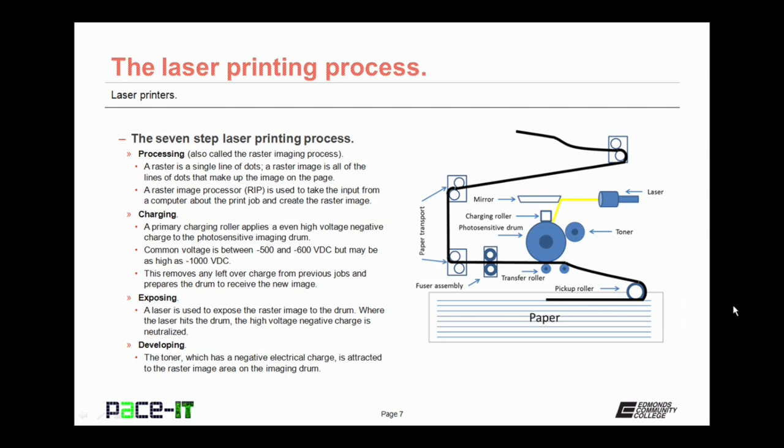The next step is charging. A primary charging roller applies an even high voltage negative charge to the photosensitive imaging drum. The common voltage ranges between negative 500 and negative 600 volts direct current, but it may be as high as negative 1000 volts direct current. The charging process will remove any leftover charge from previous jobs and it prepares the drum to receive the new image, which is the next step, exposing.